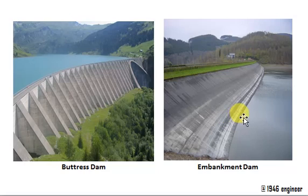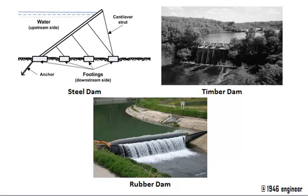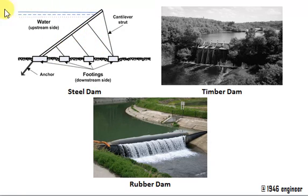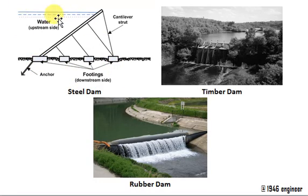Next, we have a steel dam, where you have a series of footings on the downstream side, along with a steel panel supported by struts. The horizontal thrust of the water is directed into these struts and then into the footings on the downstream side. This series of footings supports the horizontal thrust of the water.